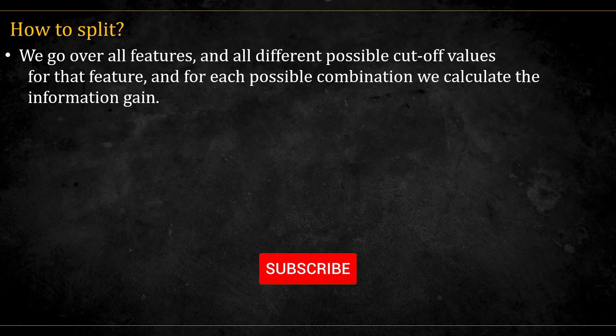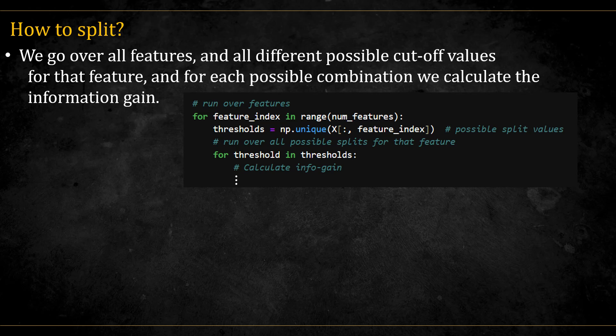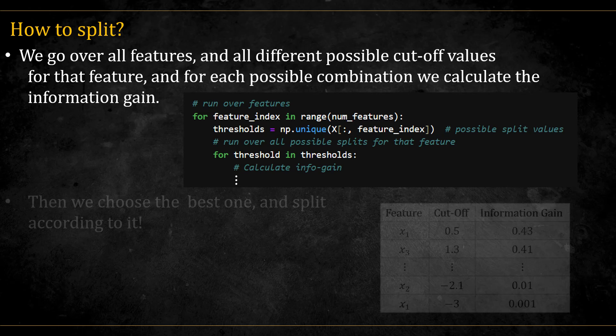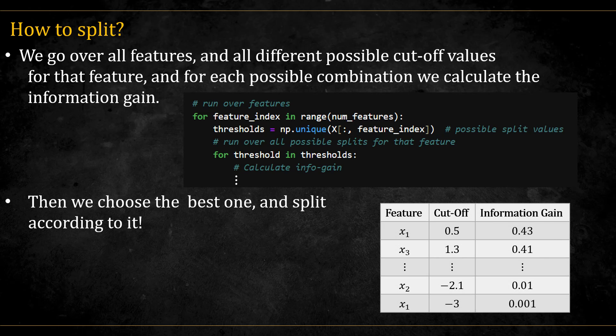Now that we know to actually measure how good a split is, how do we find the best split? Well, nothing ingenious here. We use brute force search. We go over each feature, and for each feature we test all possible cutoff values and make a split there. We measure the information gain from every such split. Here is an excerpt from a code implementation in Python that does exactly that. Go over each feature, extract the possible cutoff values from that feature, and go over each value to make a split there. Once we have the information gain for all the splits, we can choose the split with the most information gain and do the actual split there.